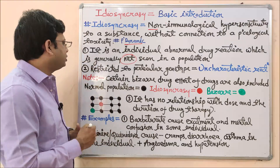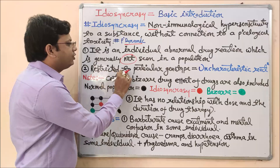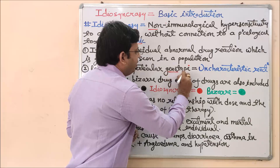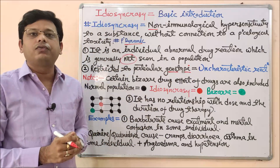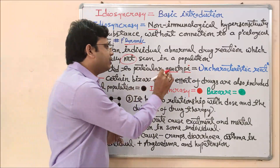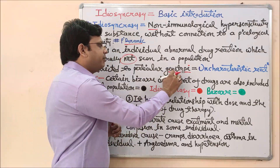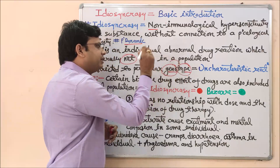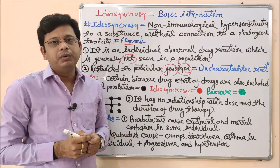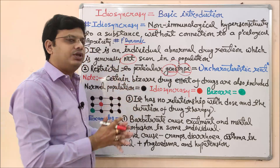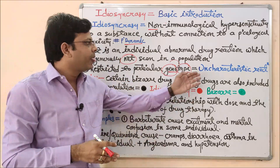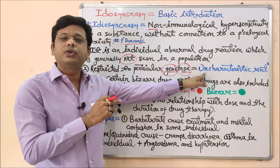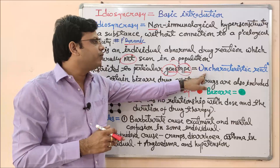Idiosyncrasy is restricted to a particular genotype. It is not the fault of the drug or the pharmacological profile — it is based on genotype. The word 'genotype' is made of two parts: 'geno' and 'type,' meaning it is based on the type of genetic sequence. This genotypic responsibility is responsible for causing idiosyncrasy, and that is why there is an uncharacteristic reaction in the drug profile.